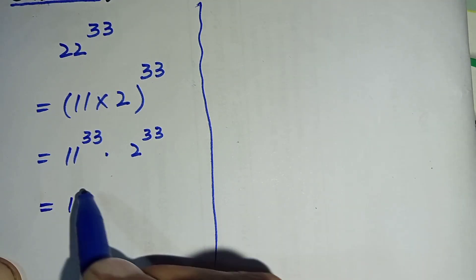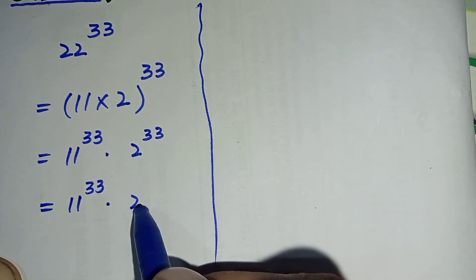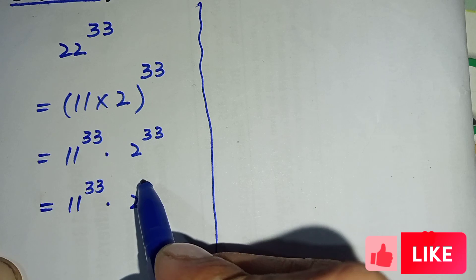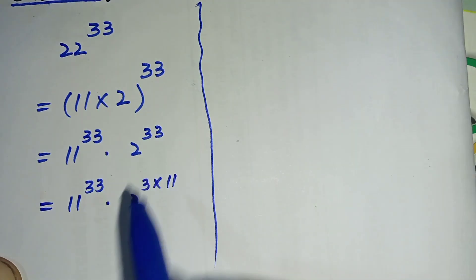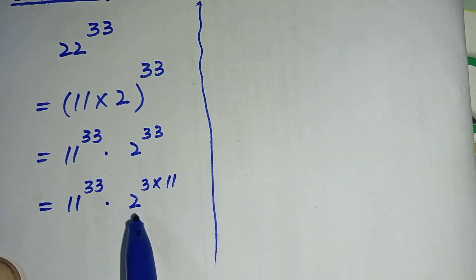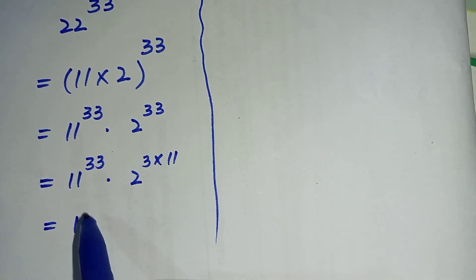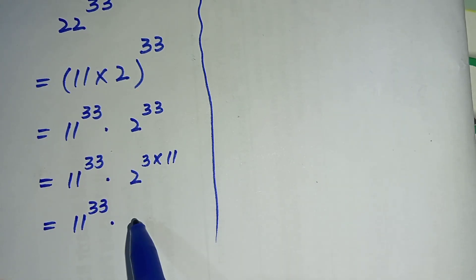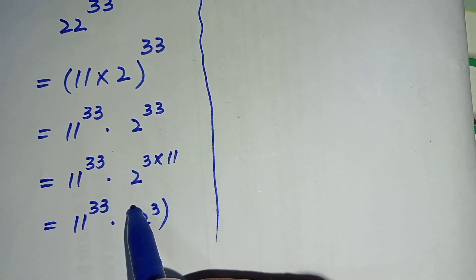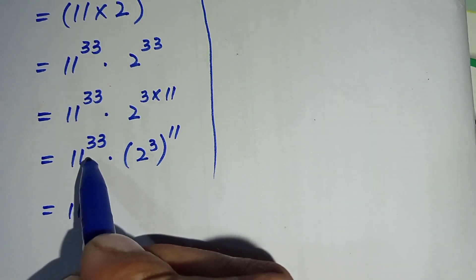We will keep 11 to the power 33 as the same. For 2 raised to the power 33, we can write 33 as 3 times 11, since 3 times 11 gives 33. So again we can write this term as 11 to the power 33 multiplied by 2 raised to the power 3, whole raised to the power 11, by using an exponential formula.